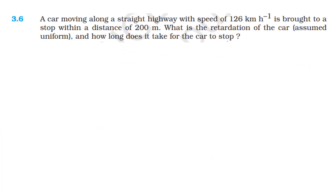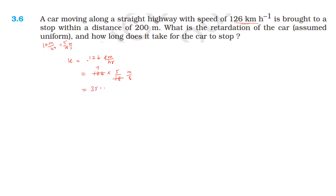The car is moving with an initial speed of 126 km per hour. One kilometer per hour is equal to 5 by 18 meter per second. So 126 km per hour equals 126 × 5/18 = 35 meter per second. The initial velocity of the car is 35 meter per second.